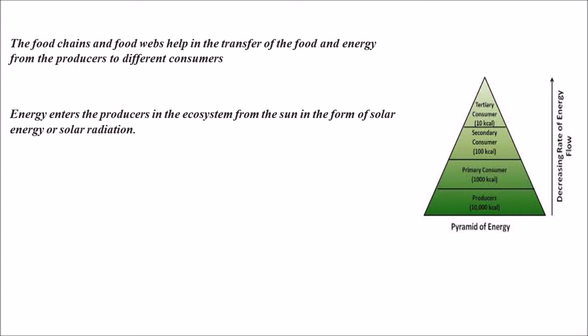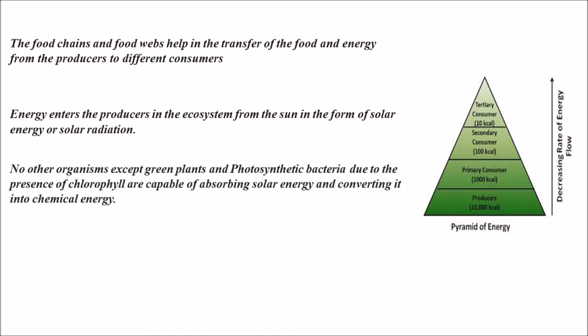Energy enters the producers in the ecosystem from the sun in the form of solar energy or solar radiation. No other organisms except green plants and some photosynthetic bacteria, due to the presence of chlorophyll, are capable of absorbing solar energy and converting it into chemical energy.